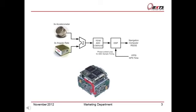The DSP also integrates the outputs, giving change in angle and change in velocity outputs rather than acceleration and angular rates. The timing of the ADC is controlled by the DSP, which runs on a phase-lock loop that synchronises the ADC to GPS time. This ensures that the RT samples at exactly 100 Hz and that the measurements from the RT are aligned to GPS time.